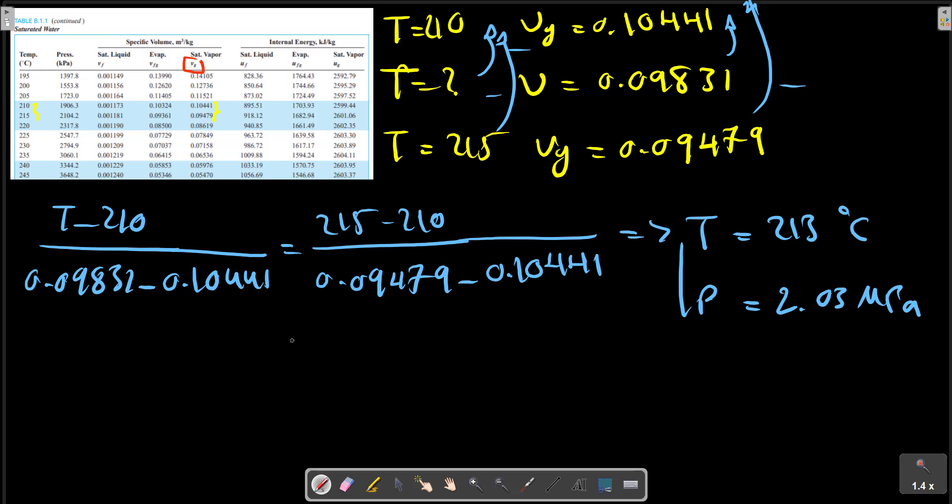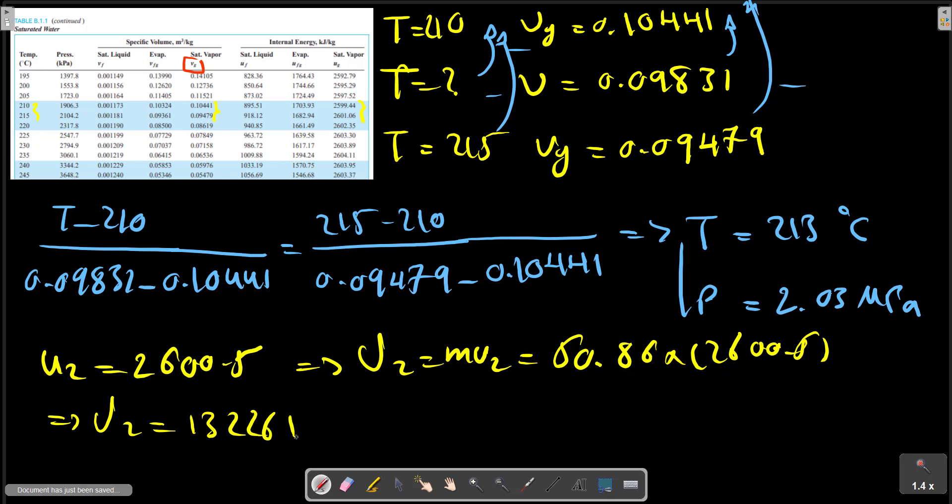Now we can obtain U2. For this pressure, approximately we should make an interpolation between these two quantities. U2 equals M times u2.